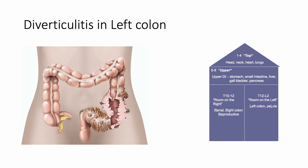An older person comes in for diverticulitis. They've had stool changes, fever, ate seeds, and have a history of diverticulosis. CT scan confirms outpouchings. You do an OMM exam and find tissue texture changes — what sympathetic level would you treat? Most likely left colon. This person is having diverticulitis there, and the answer is going to be T12 through L2. If they give you L1 or L2 as an option, just pick that answer and move on.